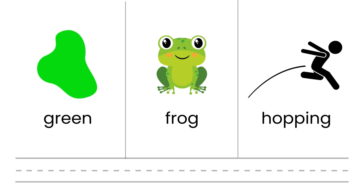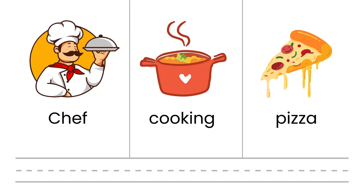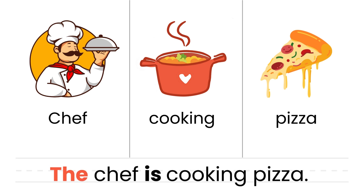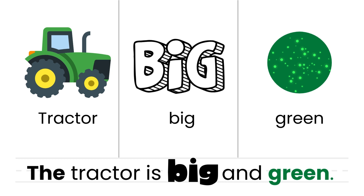Can you use these words to make a sentence? Can you make a sentence using the words shown here? The tractor is big and green.